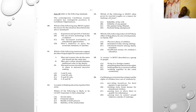Number thirteen: which of the following is most often given by married couples as a reason for seeking a divorce? A) infertility of the wife, B) infidelity of one partner, C) one partner being illiterate, D) husband being unemployed. The answer is B) infidelity of one partner — that is usually one of the main reasons for divorce, one partner being unfaithful.